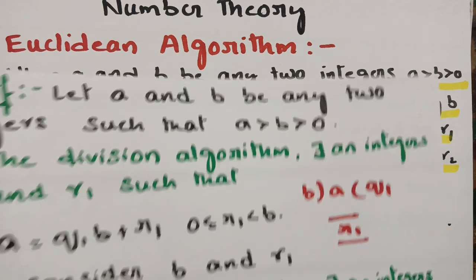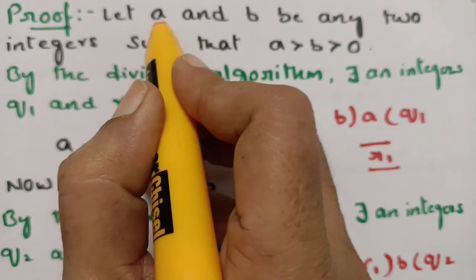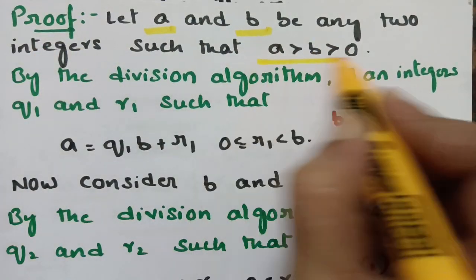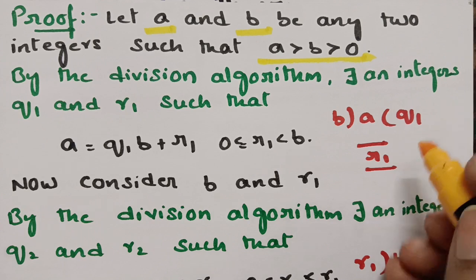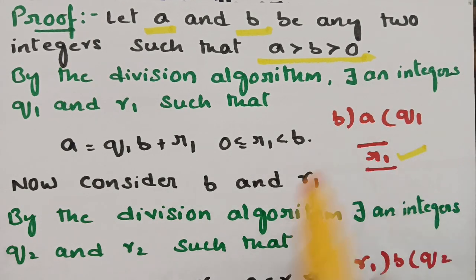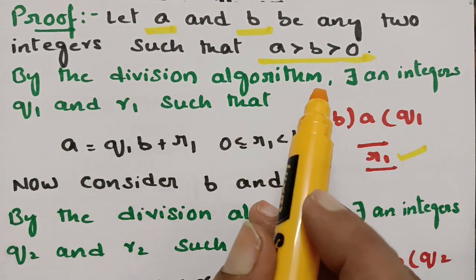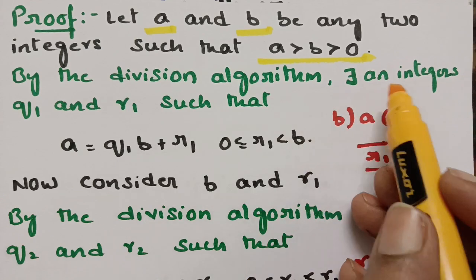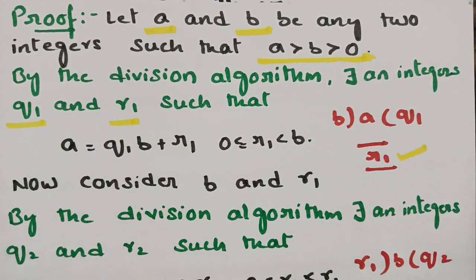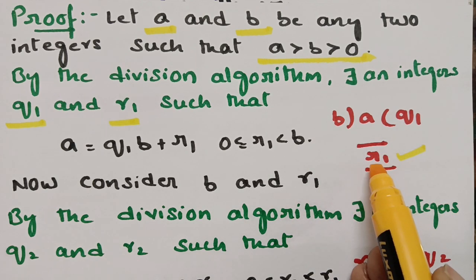The proof is written very clearly. Let A and B be any two positive integers. I am applying the division algorithm. In my previous video, I taught about the division algorithm and well-ordering principle — please refer those. By the division algorithm, there exist integers Q1 and R1 such that A equals BQ1 plus R1.